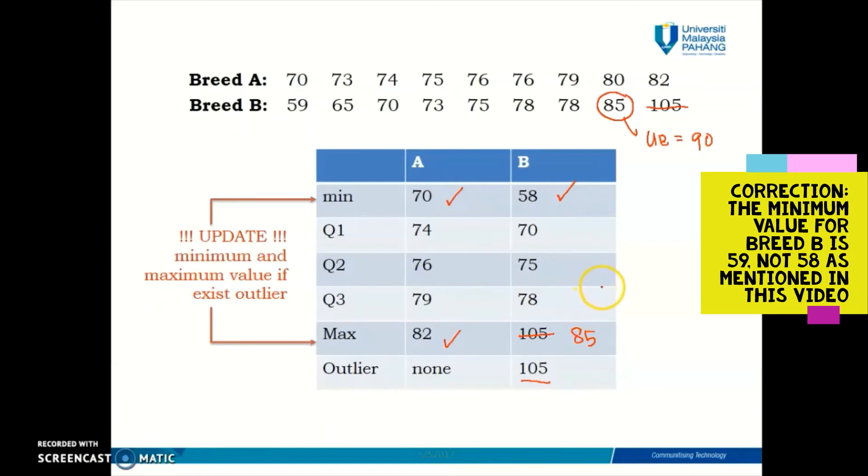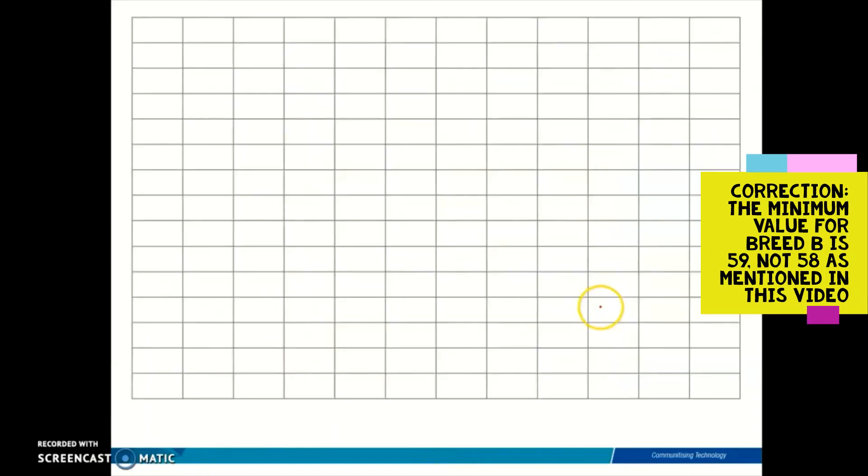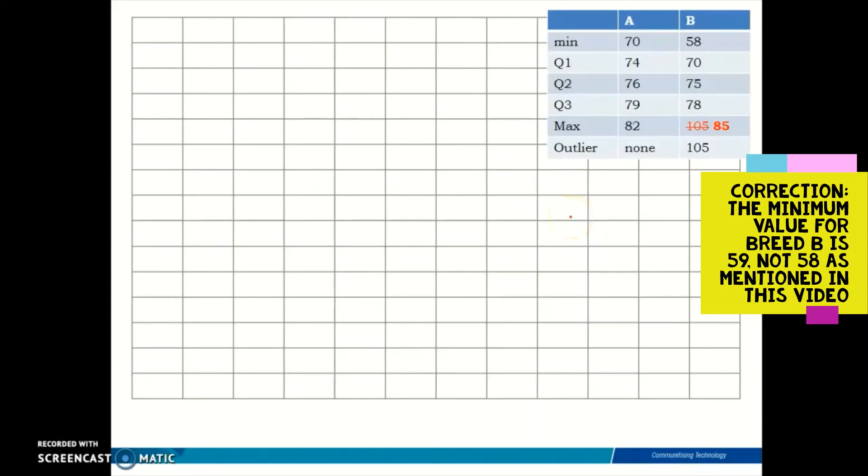Now we are ready to draw the box plot. Let's go to a grid line. You need to use a grid line in order to draw a box plot, or at least you need to have a properly scaled axis. You can either use the y-axis or the x-axis. For this video, I'm going to show you how to draw a horizontal box plot, so I'll be using the x-axis.